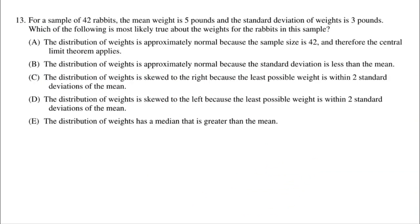For a sample of 42 rabbits, the mean weight is 5 pounds (x-bar) and the standard deviation is 3 pounds. The question asks which statement is most likely true about the weights. Choice A mentions the central limit theorem, but that deals with sampling distributions across many samples — not a single sample, so it's incorrect. Choice B says the distribution is approximately normal because the standard deviation is less than the mean, but that's not a requirement for normality and has never been taught as such.